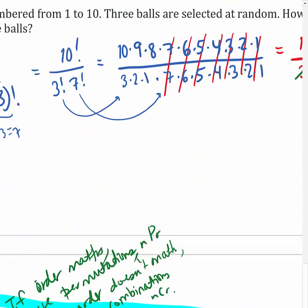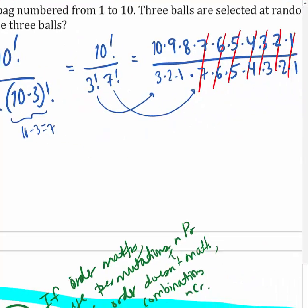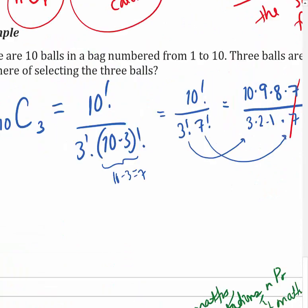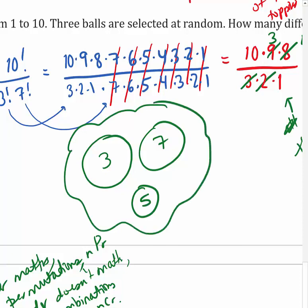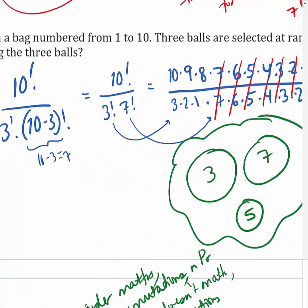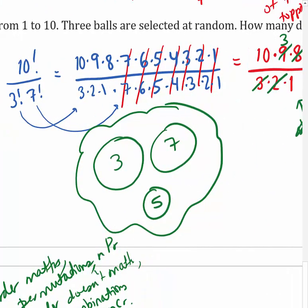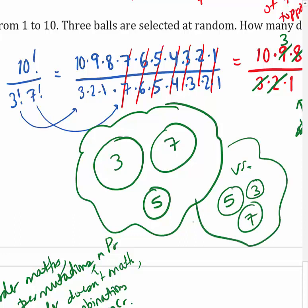In the previous example with 10 balls in a bag, order doesn't matter. If you chose ball 3, then ball 7, then ball 5 versus ball 5 first, then ball 3, then ball 7 - you end up with the same balls in your hand. The order you chose them in doesn't matter; you just want to know what numbers you ended up with. So that was a combination.